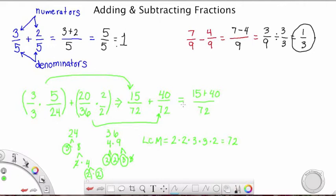How many 72nds do I have? Well, I first have 15 72nds and then I add 40 more 72nds. So here I go. And I've got 15 plus 40 is 55 72nds. And there you have it. That is our answer.